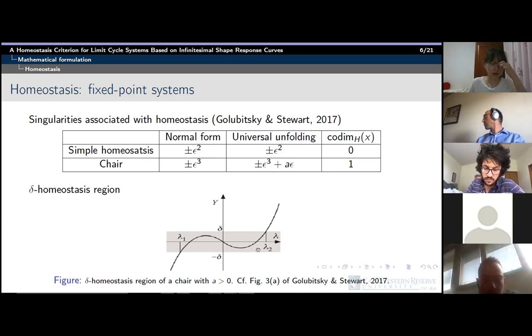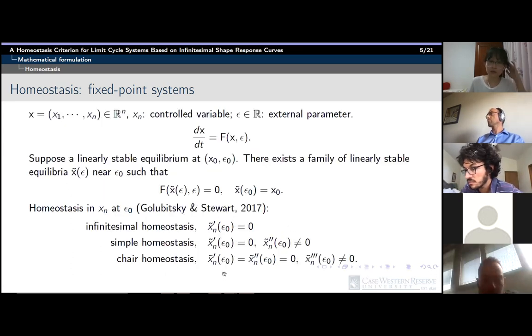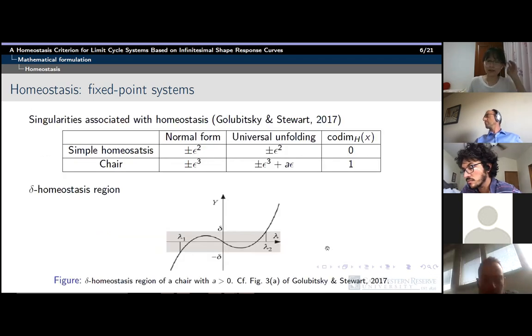That is the set of the external parameter lambda, such that the output value remains within a plus minus delta of the homeostasis value. Here lambda is the same as epsilon in our setting. This notion of the delta homeostasis region can provide a quantitative basis for comparing the robustness of different homeostasis mechanisms. Such a method was applied to study many biological systems, and all of those systems have a unique stable equilibrium for each value of the input. However, the analysis above is premised on being able to calculate the derivative of the equilibrium value with respect to the perturbation parameter. So this becomes a problem when the physiological system has a large amplitude limit cycle.